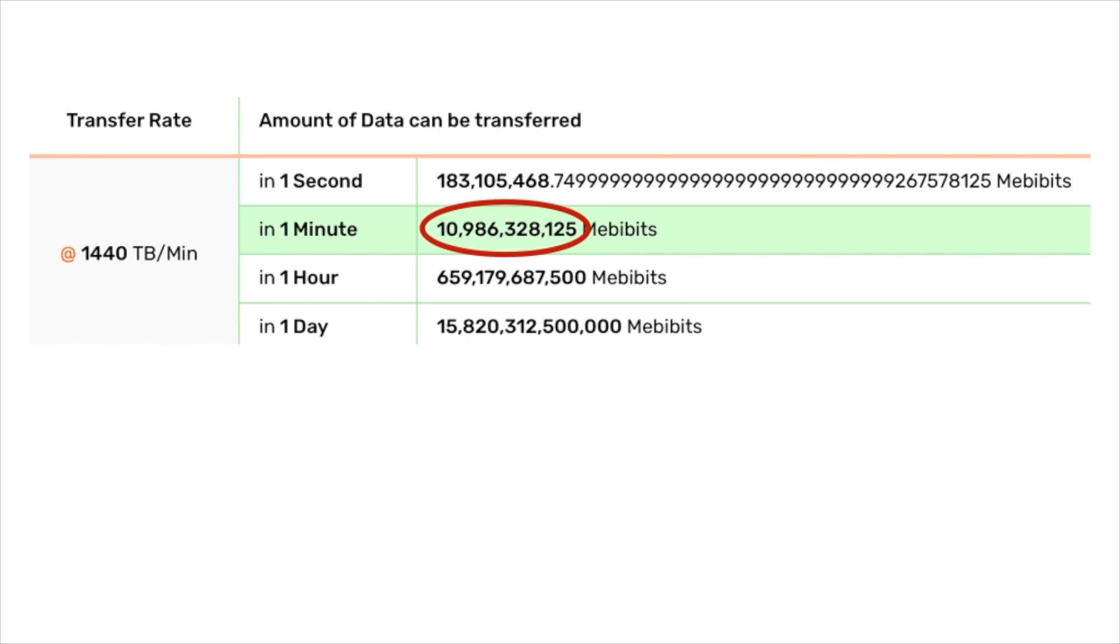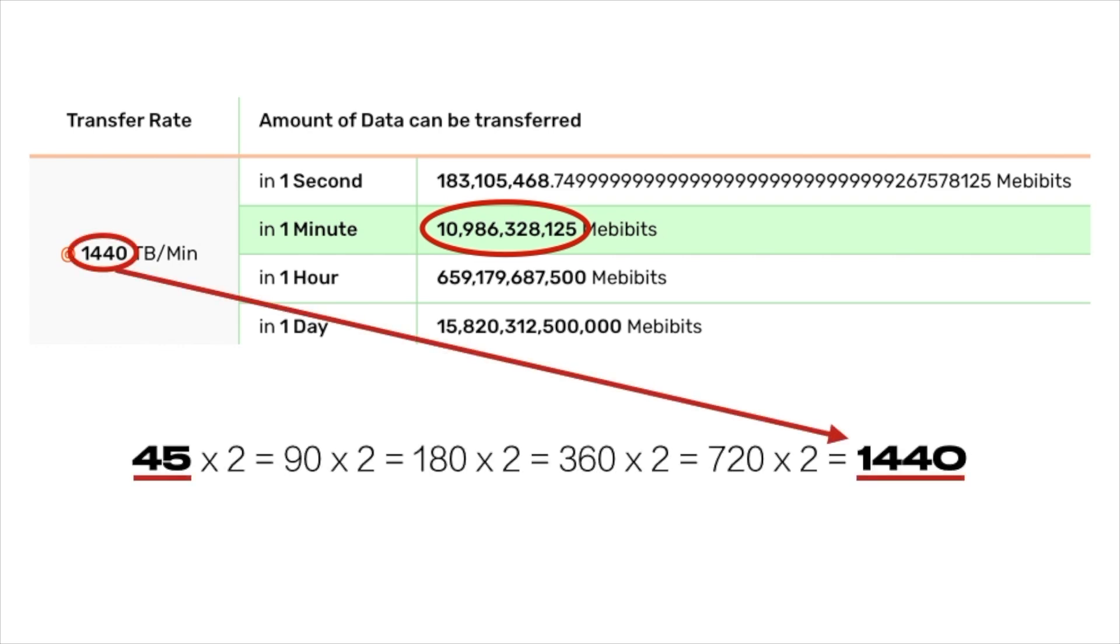And both 45 and the strange number show up in the math of digital data transfer as well. It appears as the value of mebibits that can be transferred in one minute at a transfer rate of 1,440 terabytes per minute, with 1440 being the fifth octave of 45.